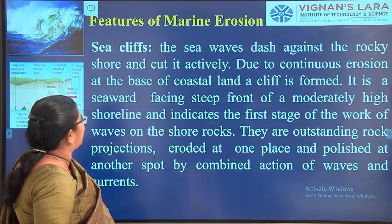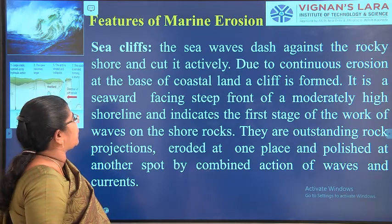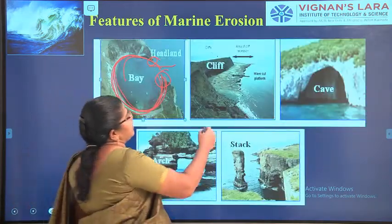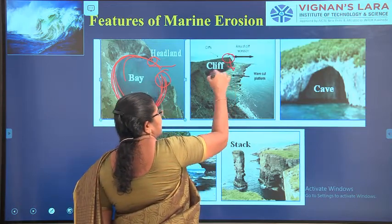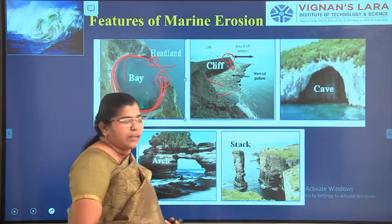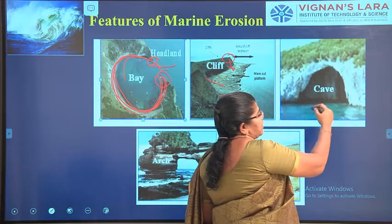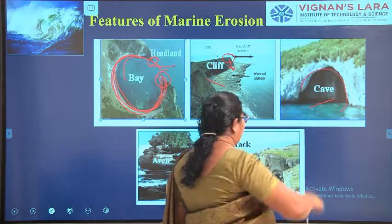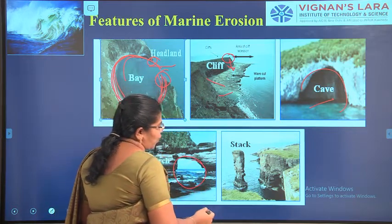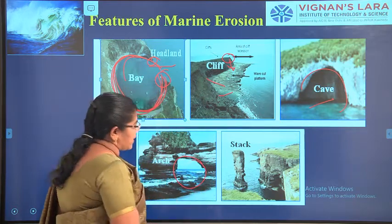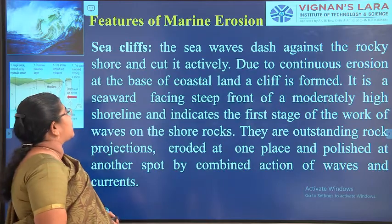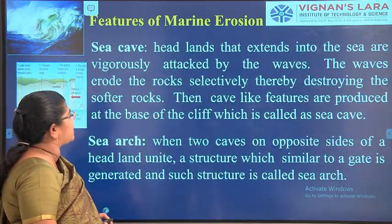The sea waves dash against the rocky shore and cut it effectively — this we call a cliff. It will be very steep due to the erosion of soil particles. The next feature is the formation of the cave — due to the sea water, a cave can be formed. Then there are arches — arch-like structures visible in many places — and sea stacks, formed by the complete removal of the arch top. We also saw wave-cut bench and sea cave.